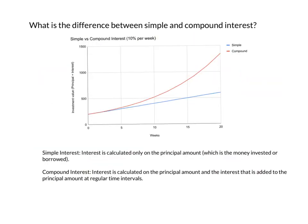I've drawn a graph of the previous example. The blue line represents simple interest — the vertical axis shows how much is owed each week. After 20 weeks, about 600 rand is owed. The red line represents compound interest. As you can see, compound interest grows very quickly — it's what we call exponential growth. After 20 weeks, a lot more than the original 200 rand is owed back.